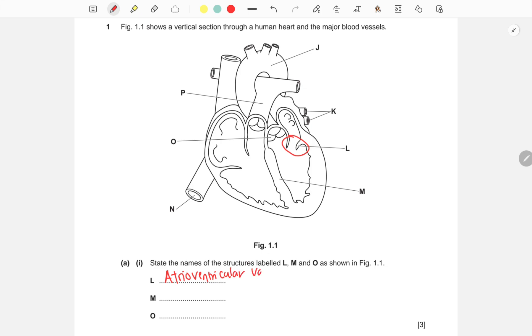Sometimes teachers might abbreviate this to AV valves, but we need to write the full name in the exam. M is referring to the septum, which separates the left from the right side so that the oxygenated blood does not mix with deoxygenated blood.